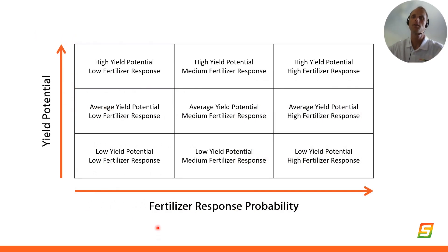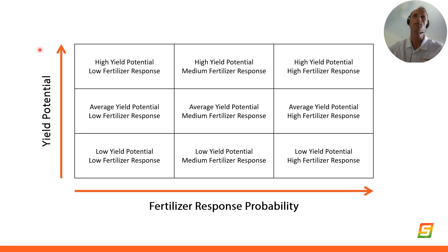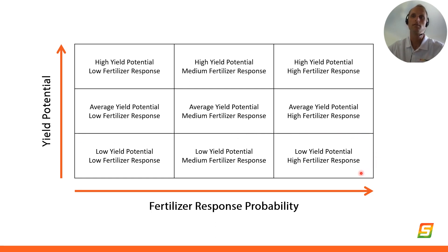One way we can think about this is we're trying to delineate different parts of the field into both fertilizer response probability — how likely it is that they'll respond to added nutrients — and yield potential. Because we need to understand both those things to make an ideal recommendation in respect to nutrients. We can have low yield potential areas because they're actually short on nutrients and their response probability is very high. For a long time we've had tools to make maps of yield potential using either NDVI imagery or yield maps at the end of the season.